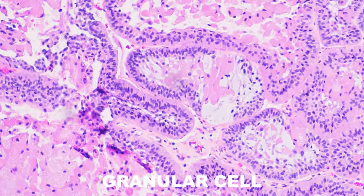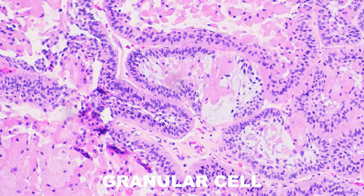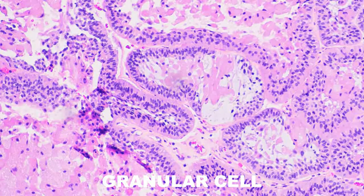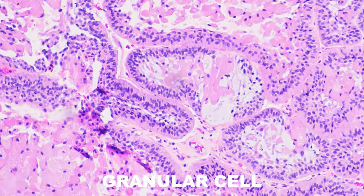Similarly, we have the granular cell ameloblastoma, where the spiderweb-like stellate reticulum areas are replaced with granular cells that have a very finely granular cytoplasm. These granules have been shown both with electron microscopy and immunohistochemistry to be lysosomes. This is one of my favorite types of ameloblastoma.